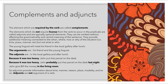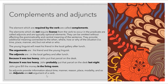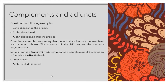You can add adjuncts and you can omit them, just as we did in previous examples. Another example: 'John gave Bill the money in the living room.' We can omit 'in the living room' and say just 'John gave Bill the money.' Adjuncts provide information about time, manner, reason, place, modality, and so on. Adjuncts are not arguments of the verb.